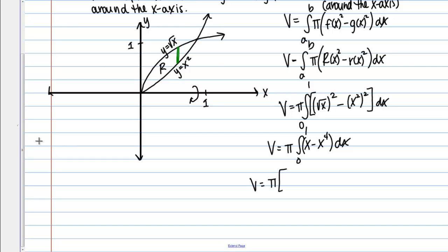Finding the antiderivative, I have π times [½x² - ⅕x⁵] evaluated from 0 to 1. Plugging in 1, I get ½ - ⅕. Plugging in 0 gives 0. So I have π(½ - ⅕), which is π(5/10 - 2/10), or 3π/10 as my final answer. So 3π/10 is the volume of the solid created by rotating this region around the x-axis.